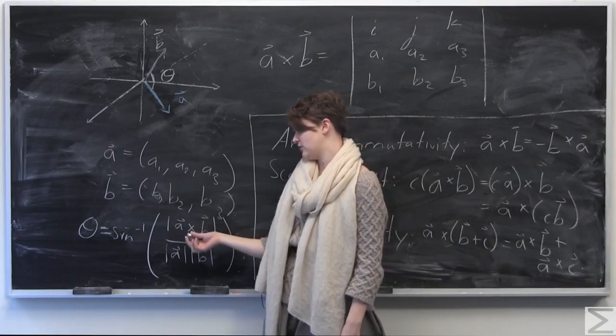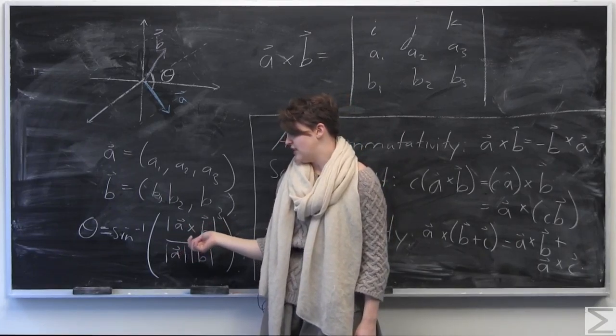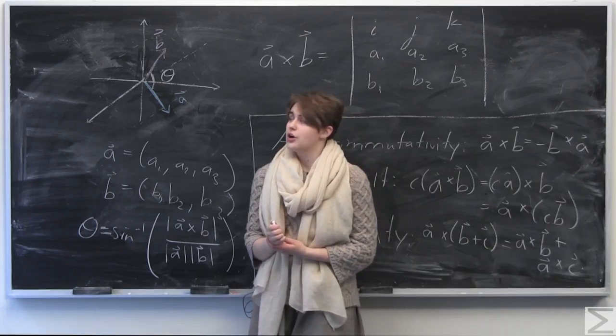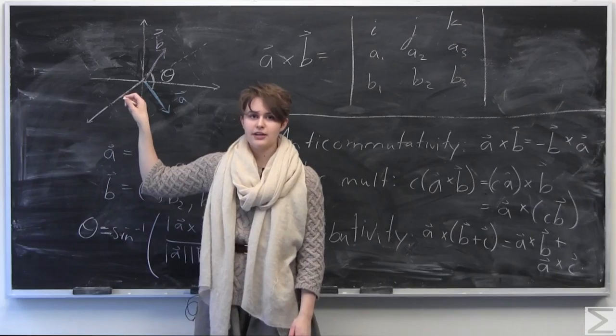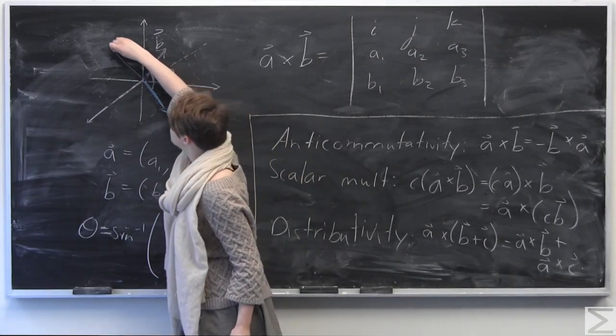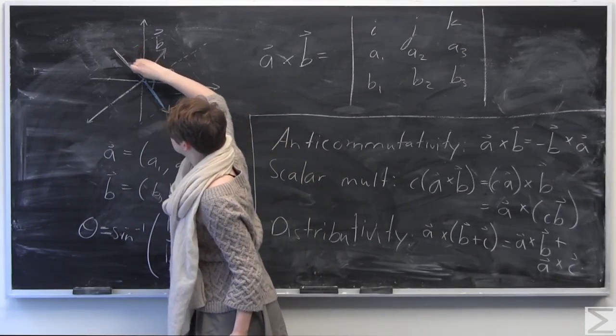So if you can imagine A and B kind of laying coplanar on some plane in R3, we have an angle between these two vectors, which we can define as the inverse sine or the arc sine of the magnitude of A cross B all over the magnitude of A times the magnitude of B.